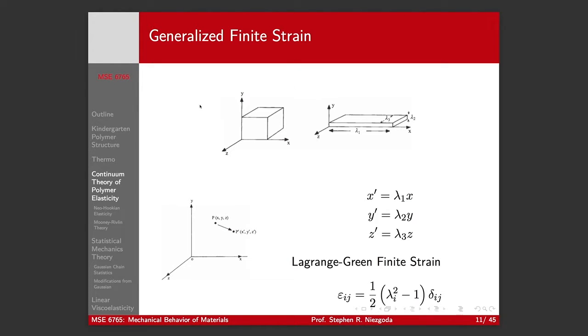But we can still define an equivalent of our Lagrange-Green finite strain tensors. Instead of in terms of displacements like we did in lecture two, we're going to do it with respect to these stretch ratios.